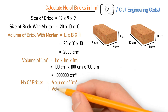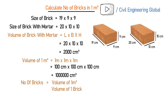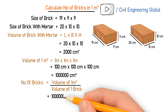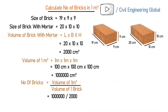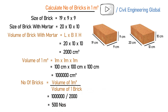Let's calculate the number of bricks. For this we have the formula: number of bricks = volume of 1 meter cube divided by volume of 1 brick. Putting in the values: 1,000,000 divided by 2,000. This gives you 500 bricks. So you will need 500 bricks for 1 meter cube.